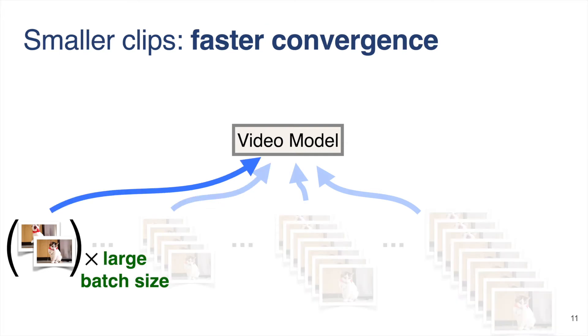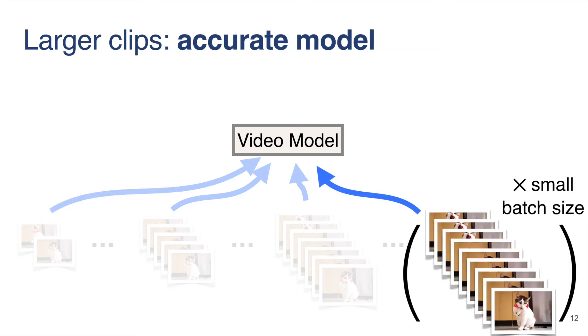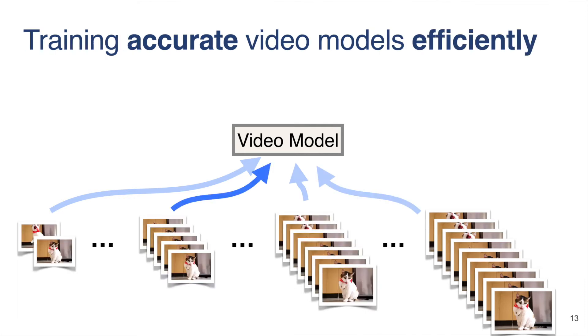For example, we may start training with smaller clips with a large batch size to train efficiently. And only when it gets closer to convergence, we gradually move towards larger clips to obtain an accurate video model that works well on large clips. We show that what the model learns from smaller clips transfers well to larger clips, so we can obtain an accurate video model with a reduced computational cost.